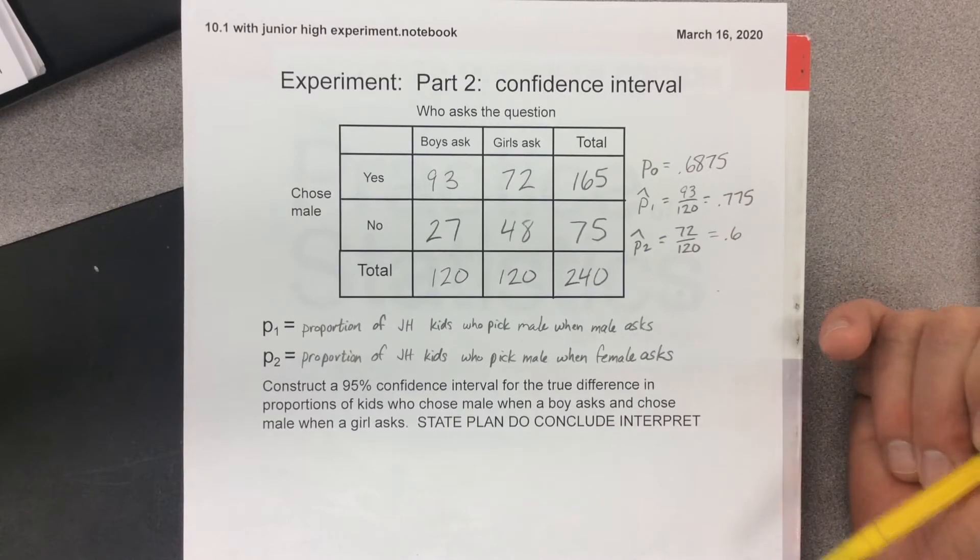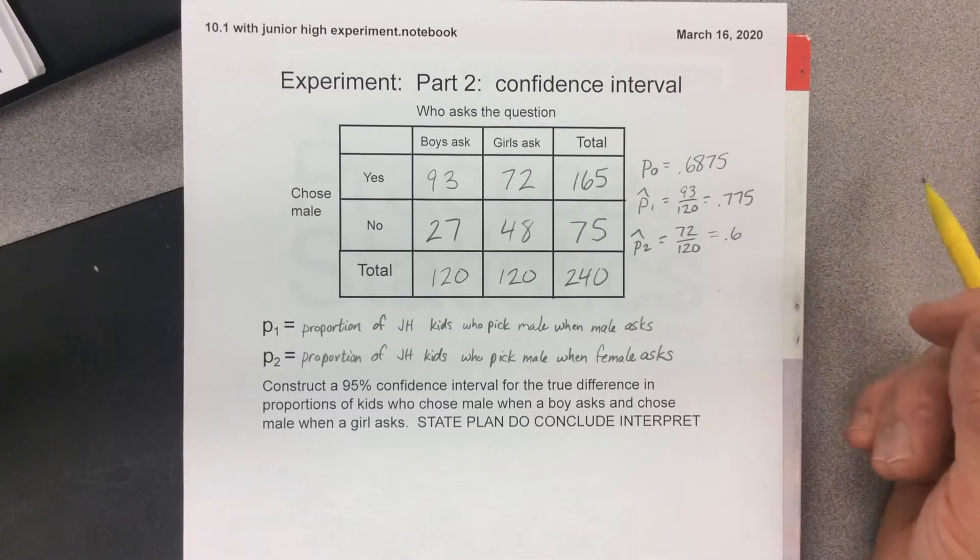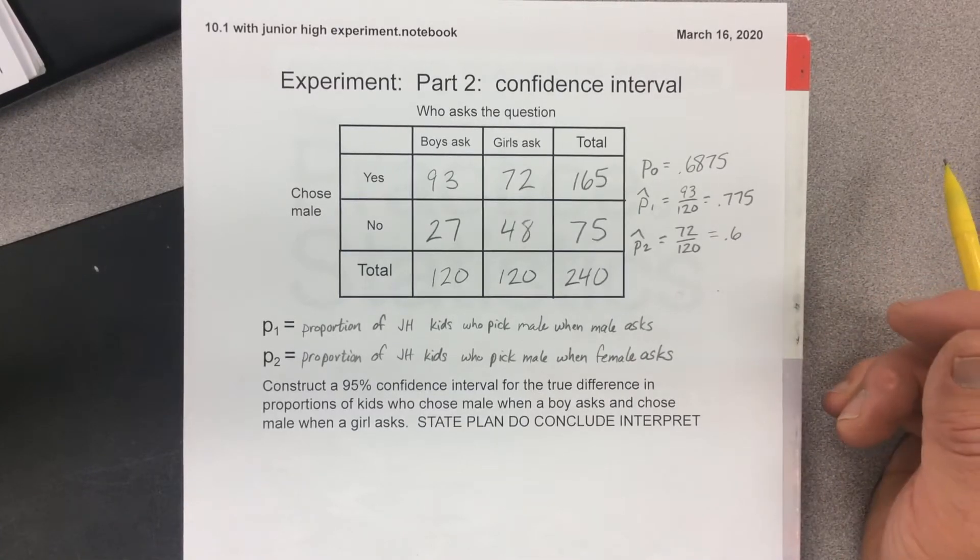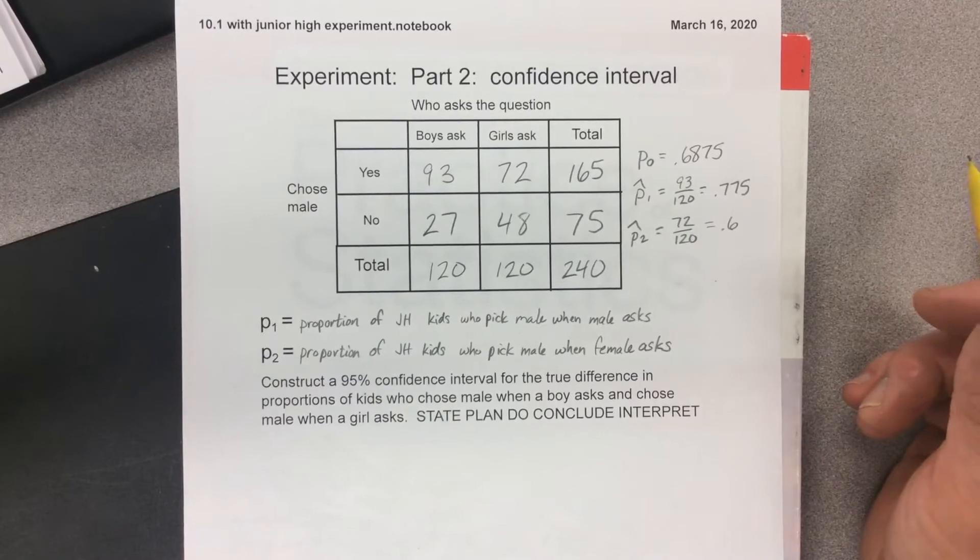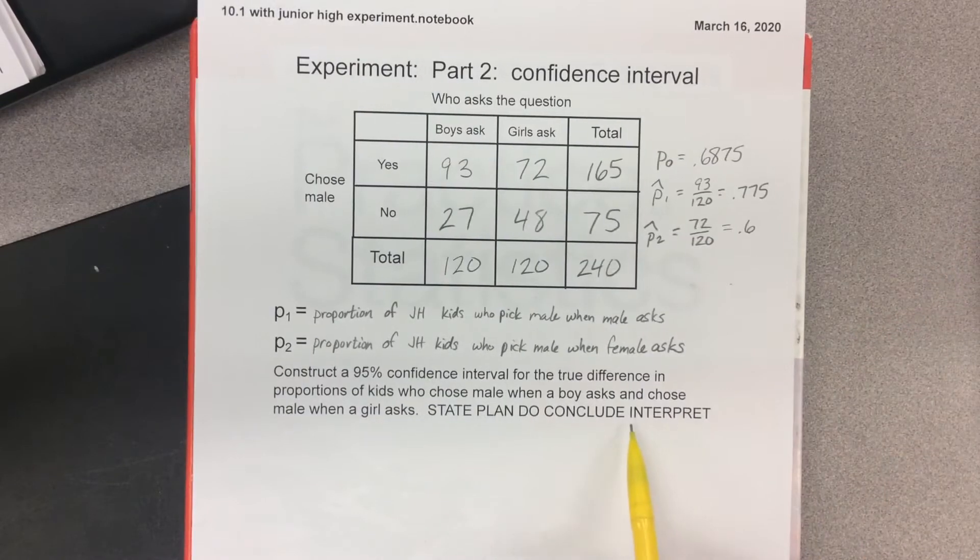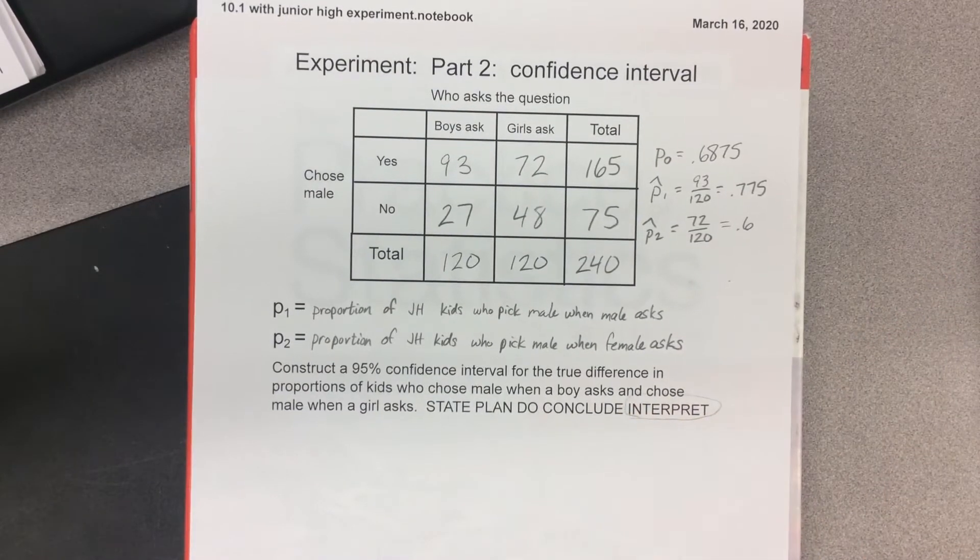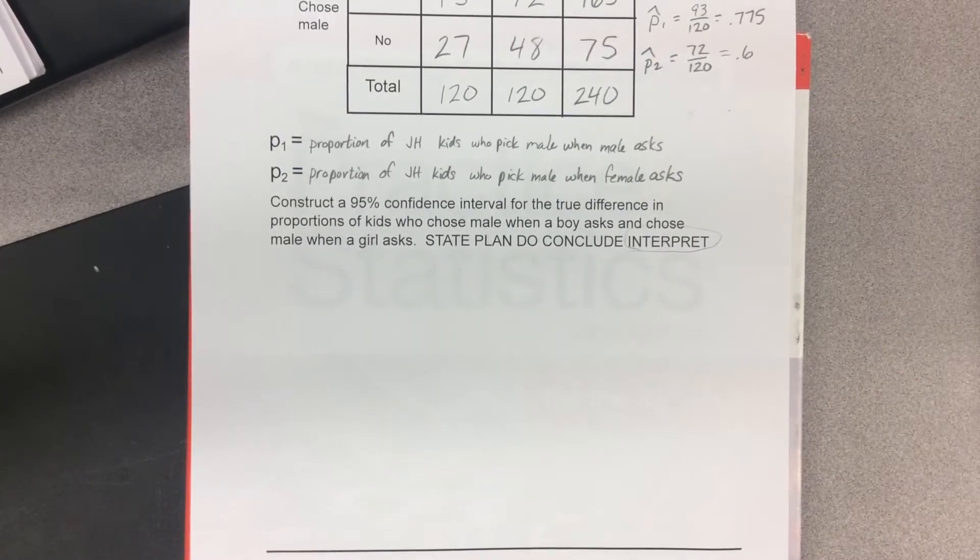These are all numbers we found before, but I'm going to help you with the setup and then you're going to finish up and post this to Canvas so I can grade it. Construct a 95% confidence interval for the true difference in proportions of kids who chose male when a boy asked and chose male when a girl asked. State, plan, do, conclude, and I have an interpret step which you're going to add.